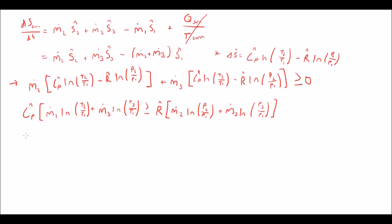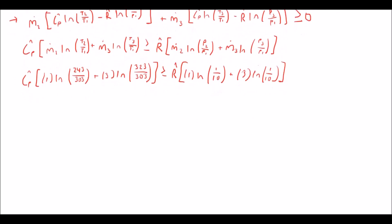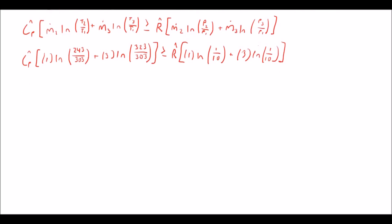Now we have everything that we'll need to finish this problem off so go ahead and plug in all the numbers. And when you solve for it what you'll end up getting is negative 0.0298 times the heat capacity is greater than or equal to negative 9.21 R.